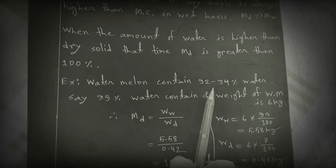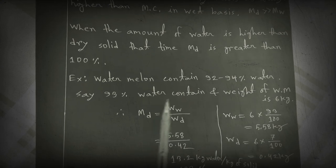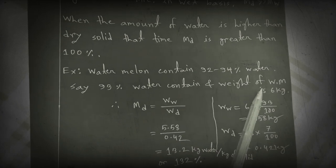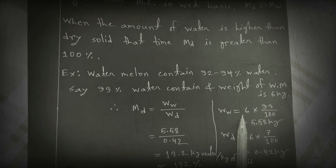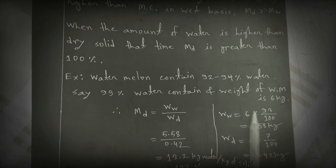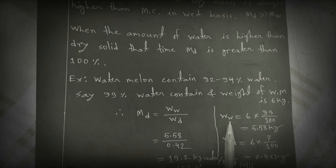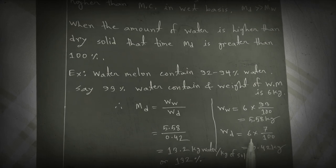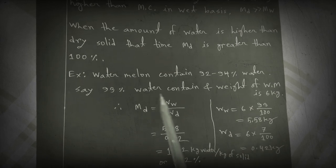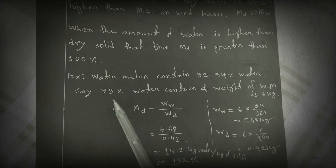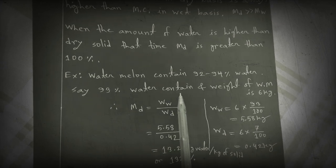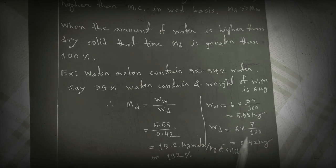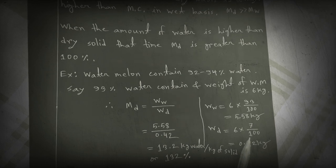For example, watermelon contains 92 to 94 percent water — say 93 percent — and the watermelon weighs 6 kg. We can calculate: Ww = 6 × (93/100) = 5.58 kg. The weight of dry solid Wd = 6 × (7/100) = 0.42 kg, since 7 percent is solid material such as fiber, sugar, etc.